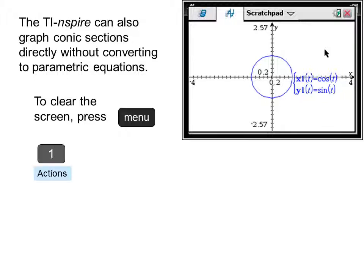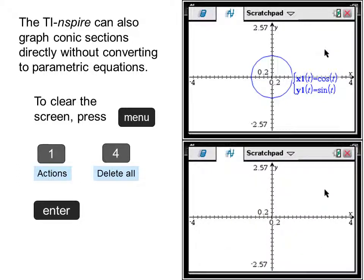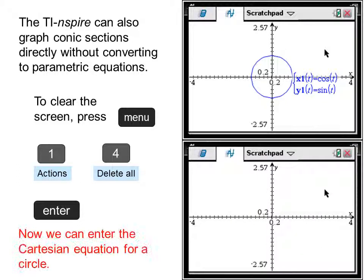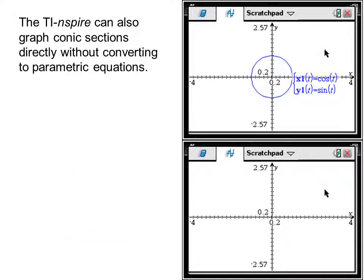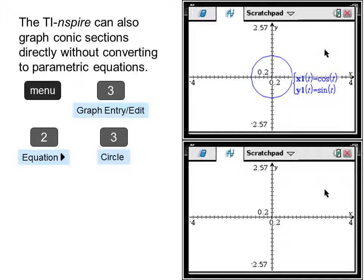The TI-nspire can also graph conic sections directly without converting to parametric equations. To clear the screen press menu, one, actions, four, delete all, and enter. Now we can enter the Cartesian equation for a circle.